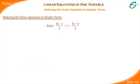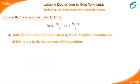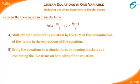To reduce the given linear equation in one variable to simpler form, we follow the following steps. Multiply both the sides of the equation by the LCM of the denominators of the terms in the expressions of the equation. Bring the equations to a simpler form by opening brackets and combining the like terms on both the sides of the equation.